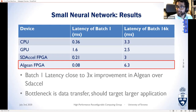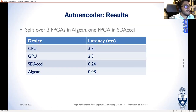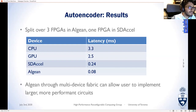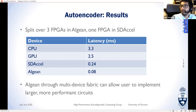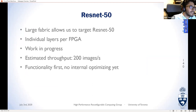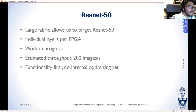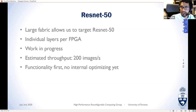FPGA-to-FPGA communication is efficient, so for a large autoencoder in Aegean split across three FPGAs we see a 3x improvement over SDx on a single FPGA, because Aegean provides a multi-device fabric for larger circuits. This opens the door for more complex circuits like ResNet-50. We're currently working on ResNet-50; our non-optimized functionality-first benchmark estimates about 200 images per second, and we'd like to reach 8,000 images per second — roughly 3x better than Microsoft Brainwave.